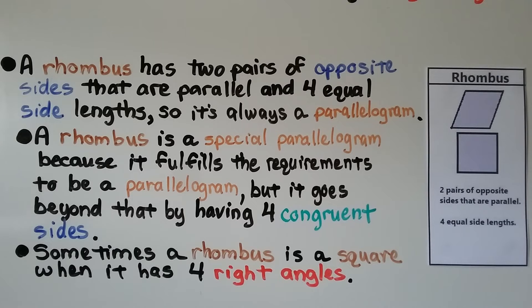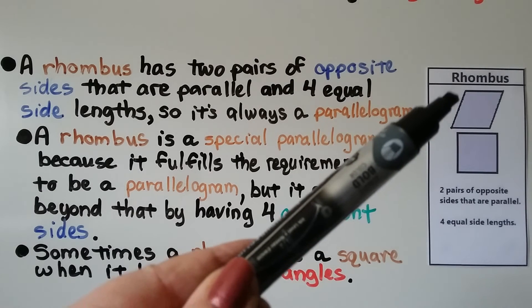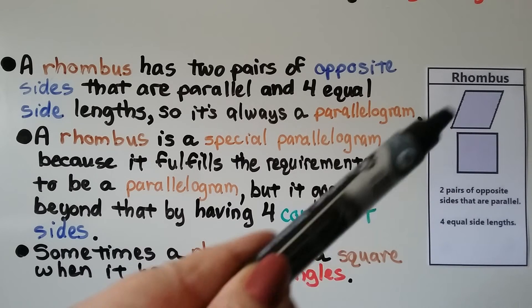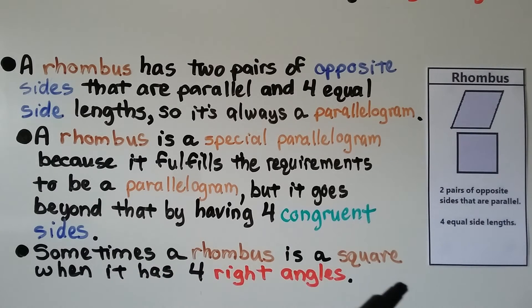A rhombus has two pairs of opposite sides that are parallel and four equal side lengths, so it's always a parallelogram. A rhombus is a special parallelogram because it fulfills the requirements to be a parallelogram, but goes beyond that by having four congruent sides. Sometimes a rhombus is a square when it has four right angles.